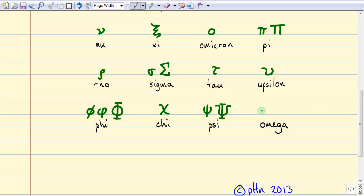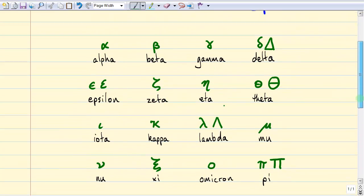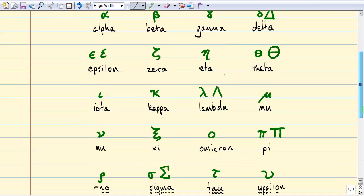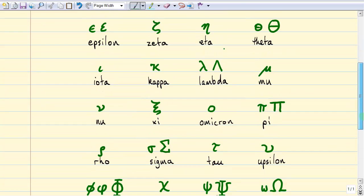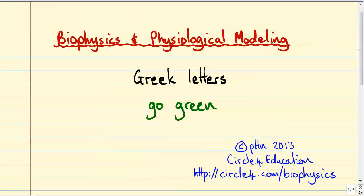The last letter of the Greek alphabet is omega, and it kind of looks like a W — it's used in regular physics for angular speed. Uppercase omega actually looks like the logo for a really expensive watch, and it's also used as the symbol for the unit of resistance, ohm. So we're now done with the Greek letters. We've gone through how to write them and how I pronounce them, and I'm going to post this page on the website at circle4.com/biophysics — look near the top of the page for the link that says videos.